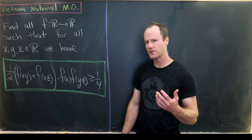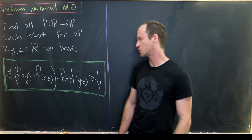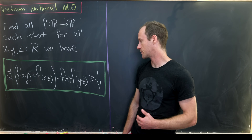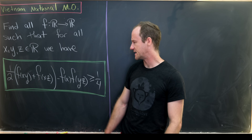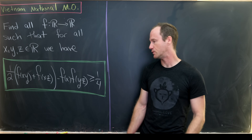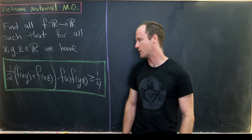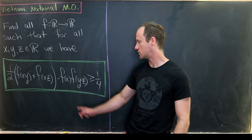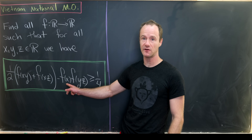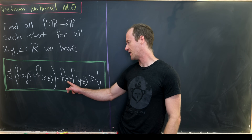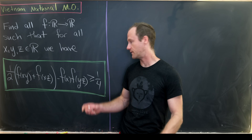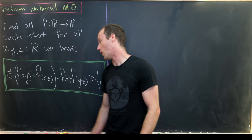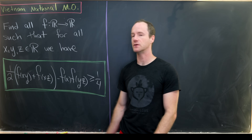The first interesting thing to notice is that the roles of x, y, and z are not symmetric. The roles of y and z are symmetric — we could swap y with z and have the same inequality — but x is playing a role on its own. It's the only time we have f evaluated at a single variable within this inequality, while f(xy) and f(xz) both contain x.